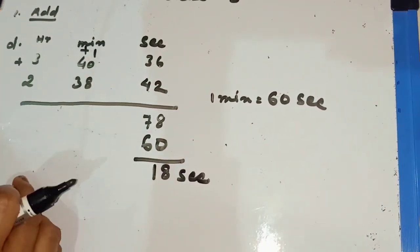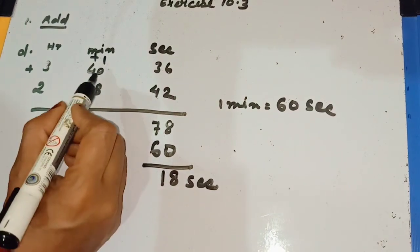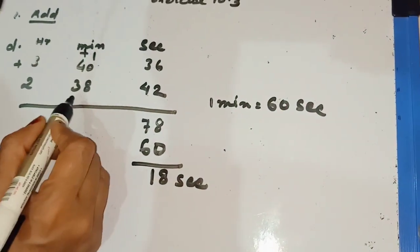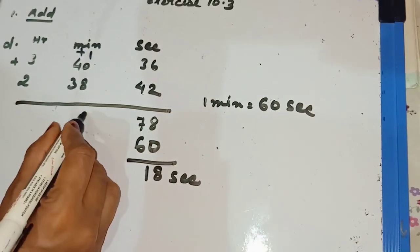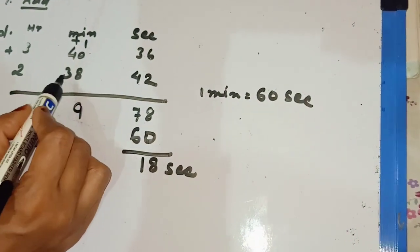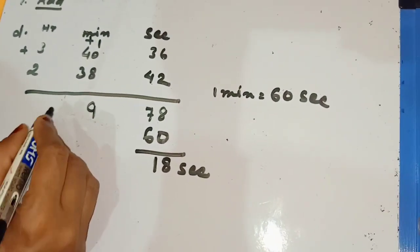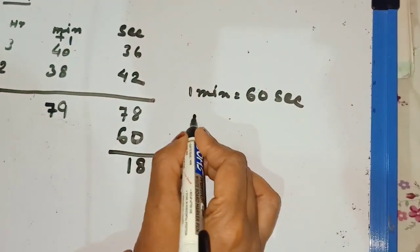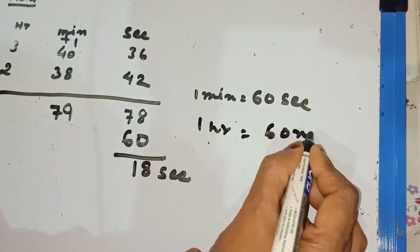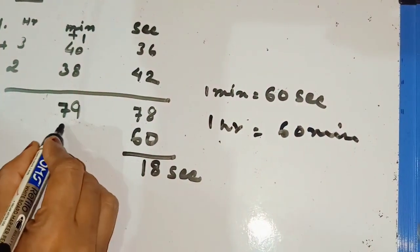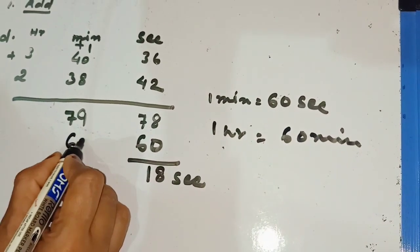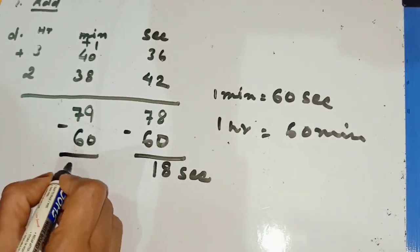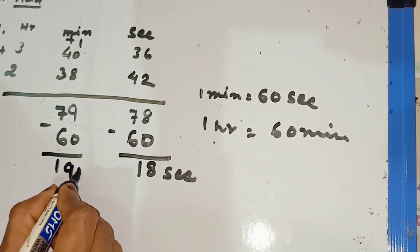In the second step we take the minutes. 8 and 1 — that 1 we took out from seconds as 1 minute. 8 and 1 is 9, and 4 and 3 is 7, so minutes total is 79. Same rule: 1 hour is equal to 60 minutes. We subtract 60 from 79 and we find out 19 minutes. And 1 hour is added here.